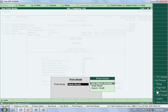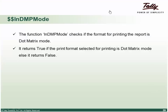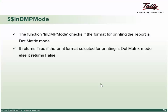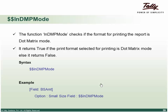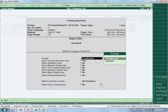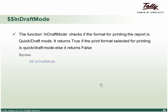If you go to a day book and press Alt+P, there is an option for print format. If you select dot matrix format, the DMP mode function identifies whether dot matrix format has been selected — if true, the format is dot matrix mode; otherwise it returns false. You might decrease the size in dot matrix mode, enable or disable something, or delete the printing background. Similarly, in draft mode it checks whether it is in quick draft mode.